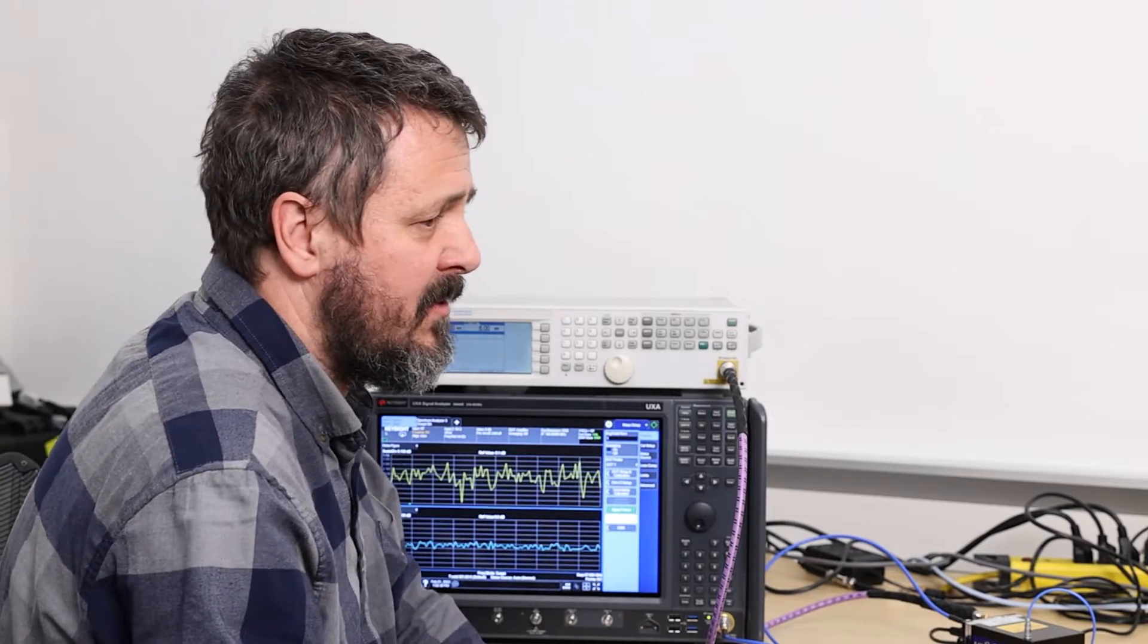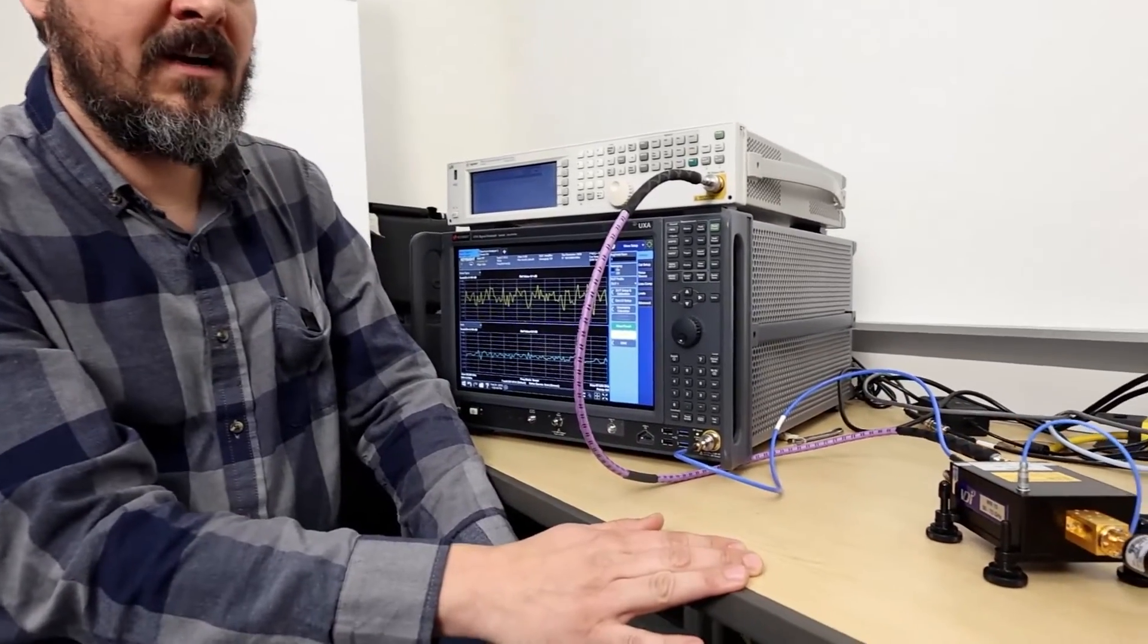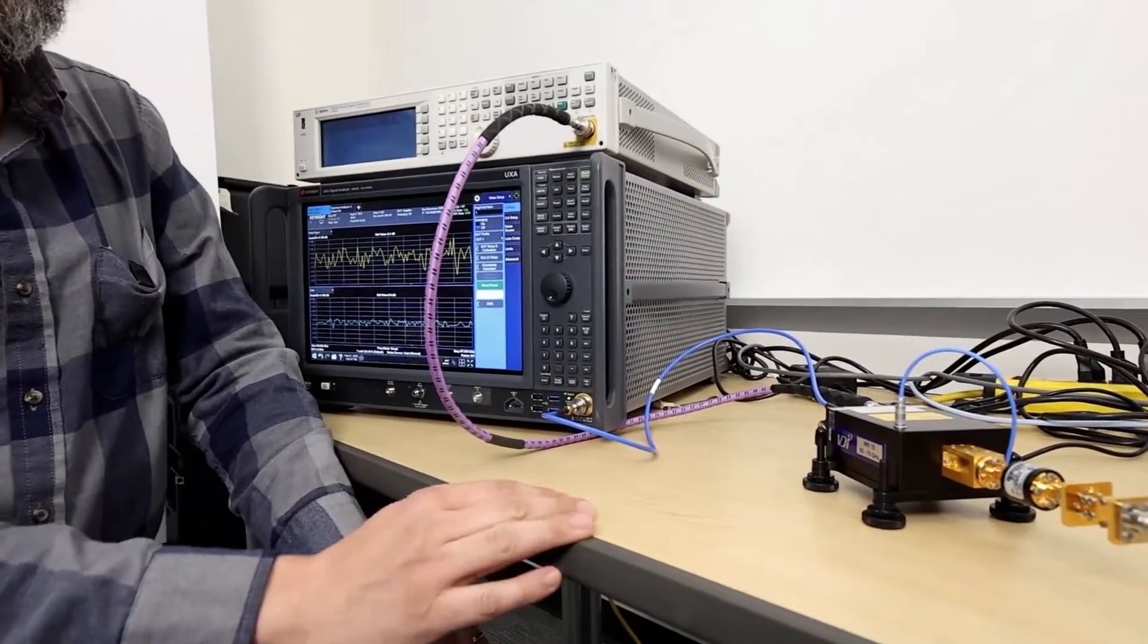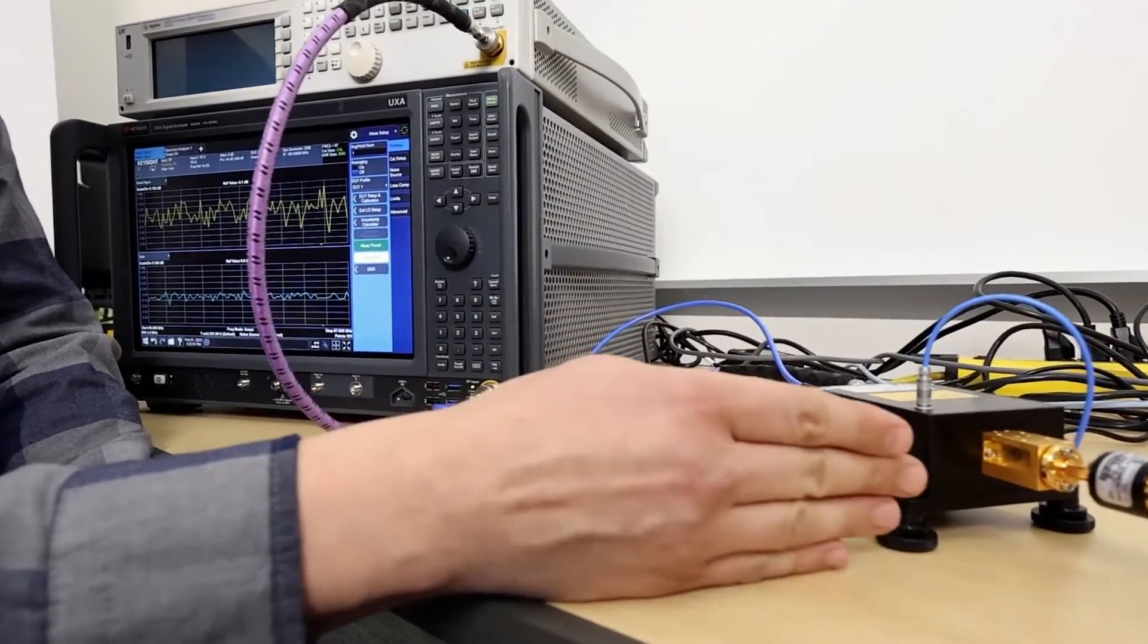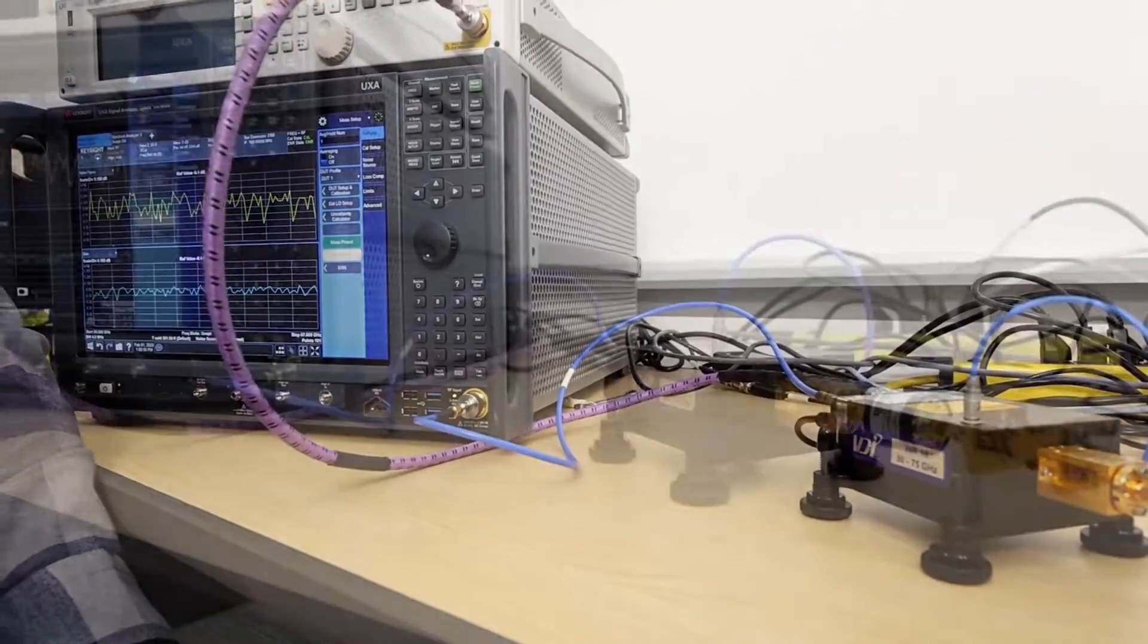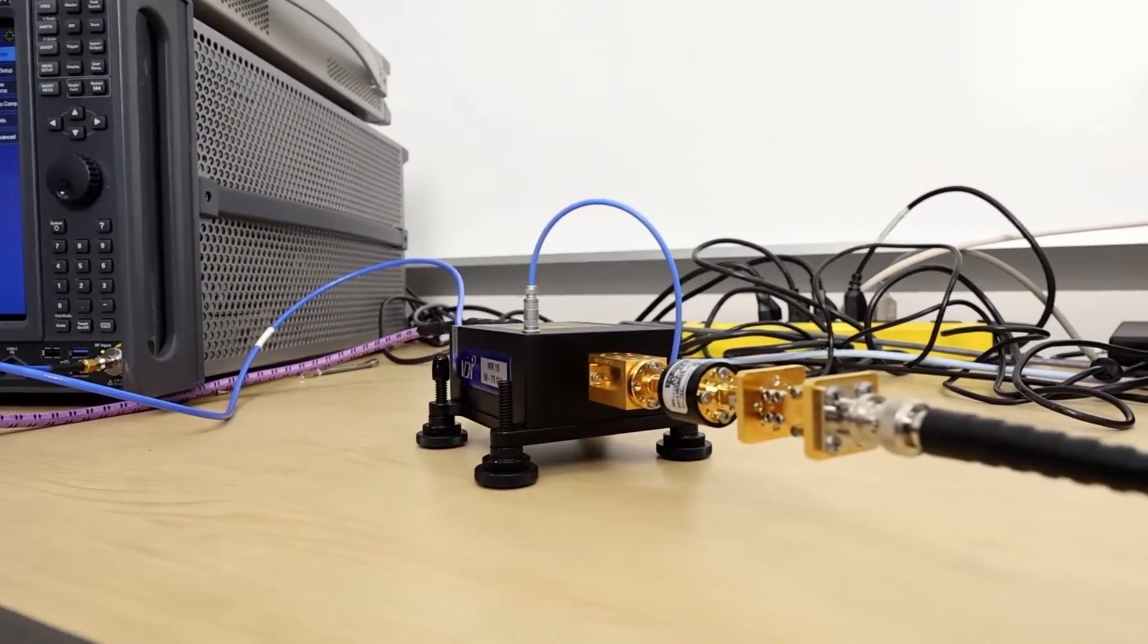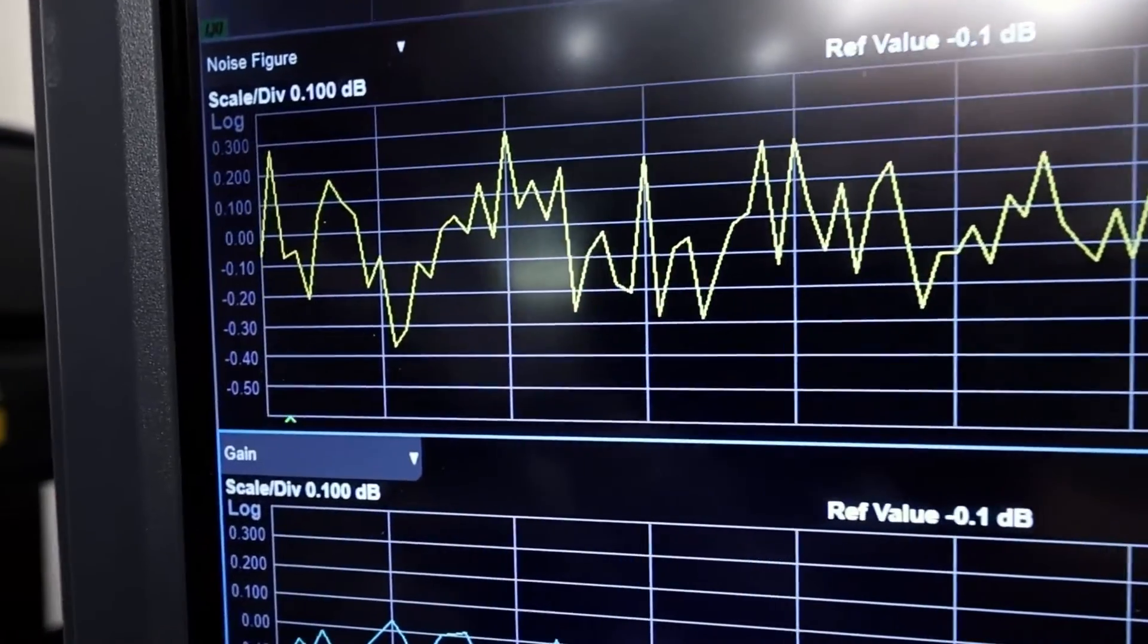We support VDI downconverters up to 330 gigahertz and possibly higher in the future. And this is our V-band 50 to 75 gigahertz downconverter. I've done the same setup as before where I use the preamplifier. The preamplifier is optional. So after the preamplifier is going to be our plane of reference to add our DUT. And I've already done a calibration and you can see a good 0 dB noise figure and 0 dB gain.